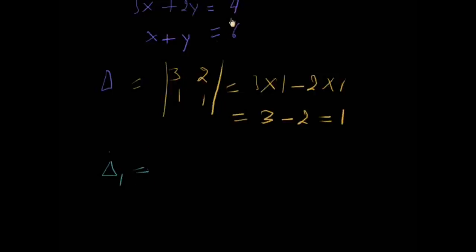For delta one, we change the first column with 4 and 6. The second column remains the same: 2 and 1.